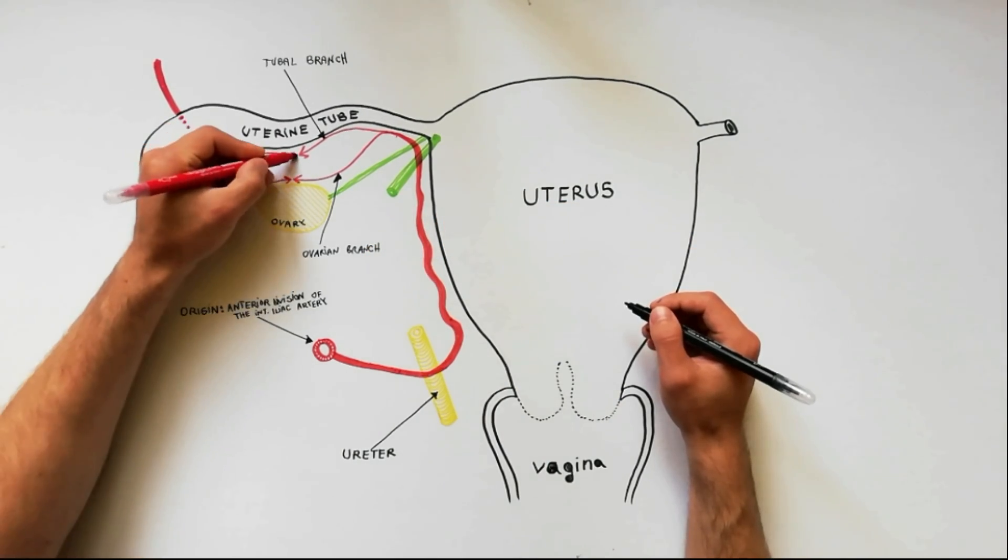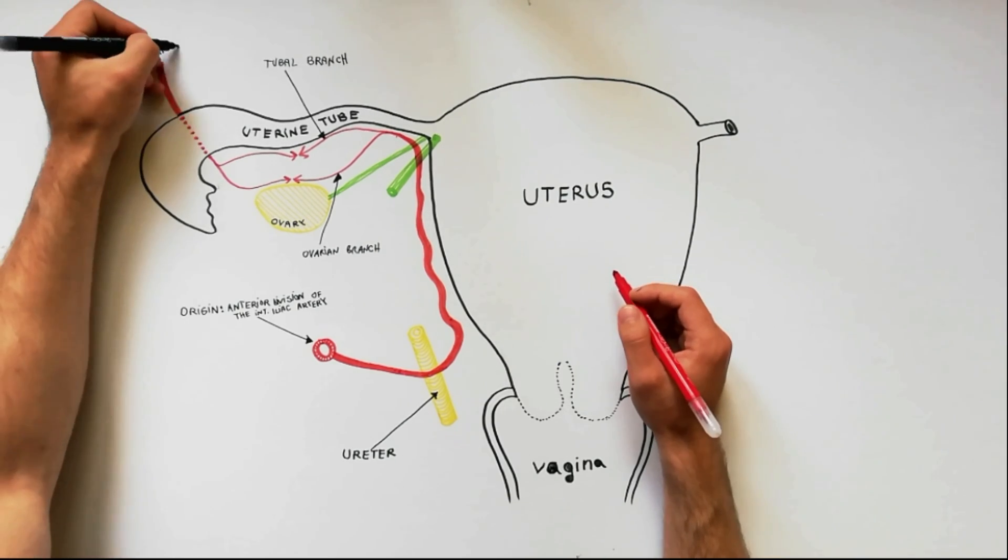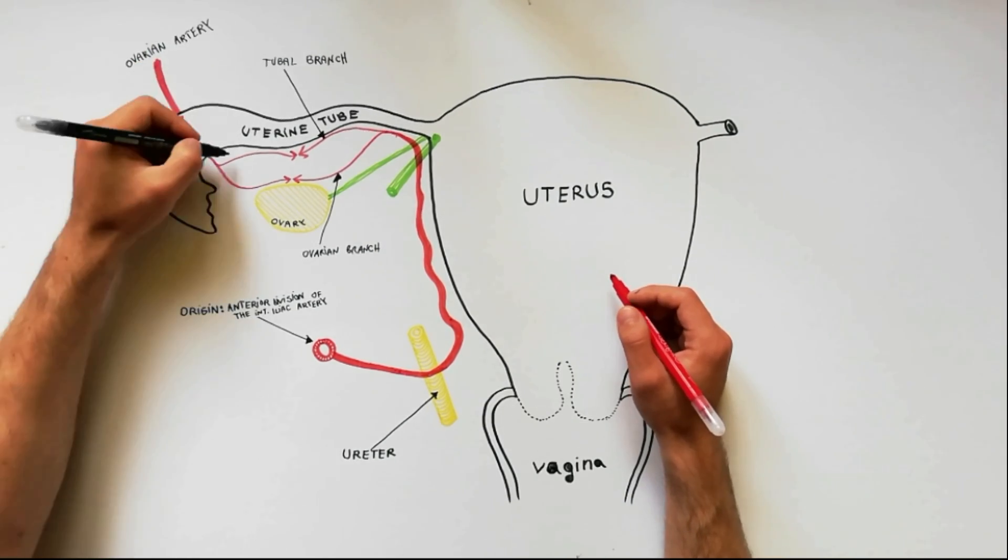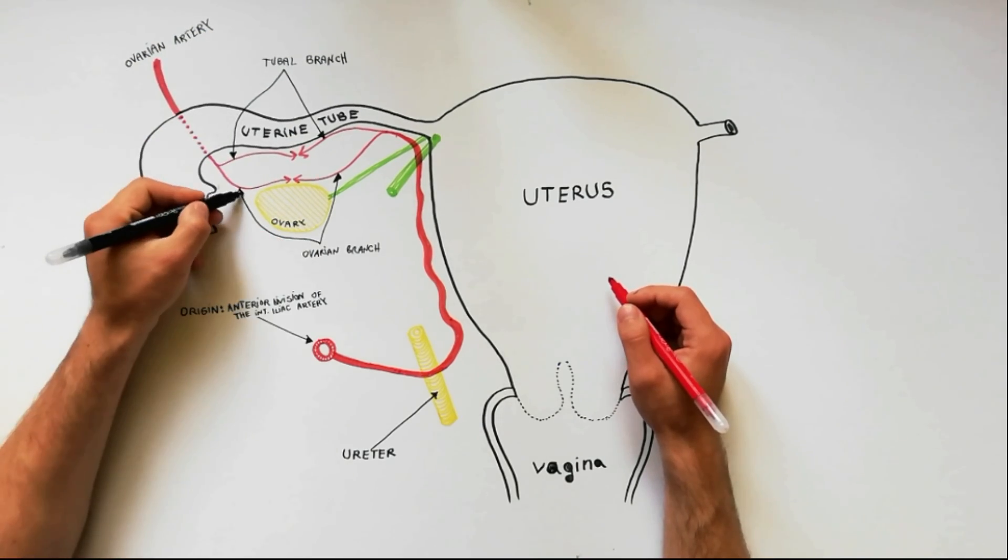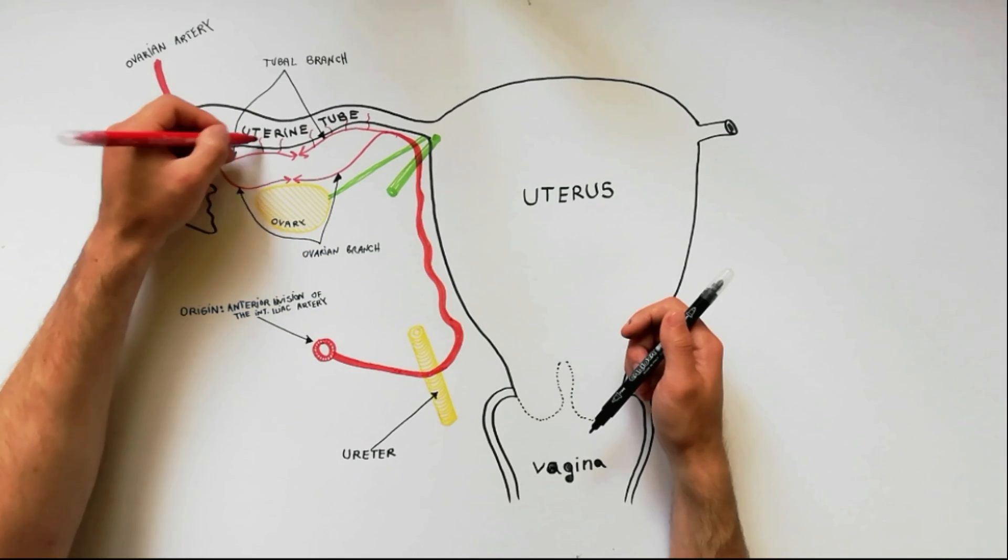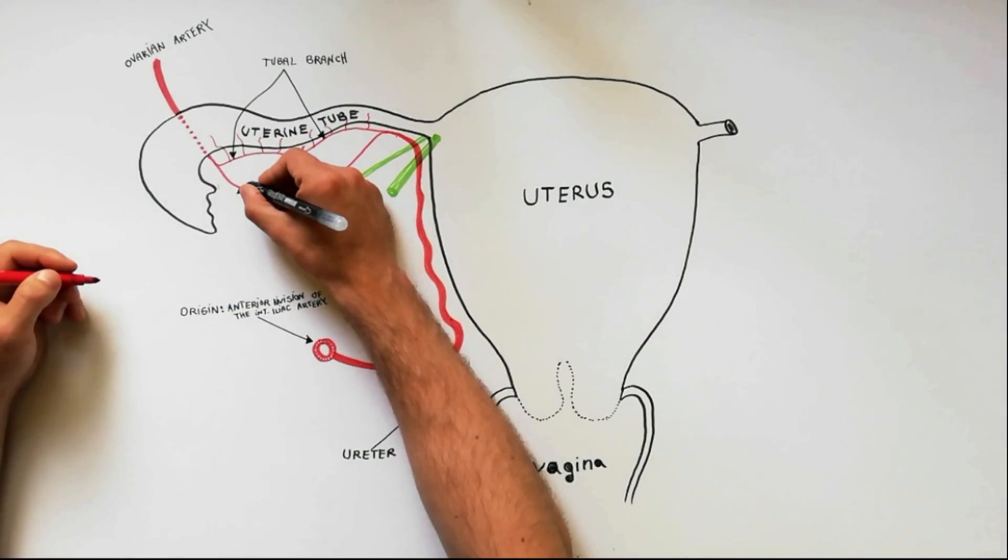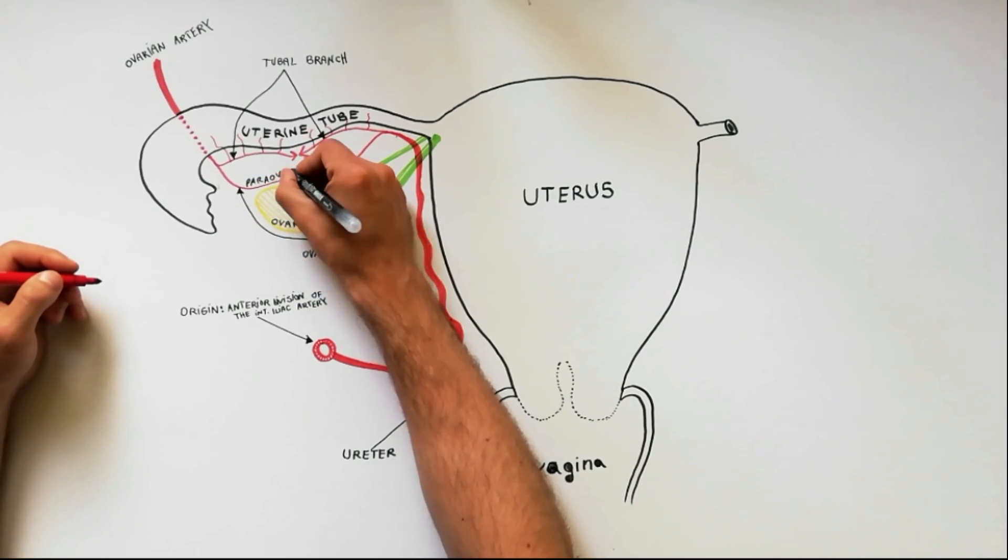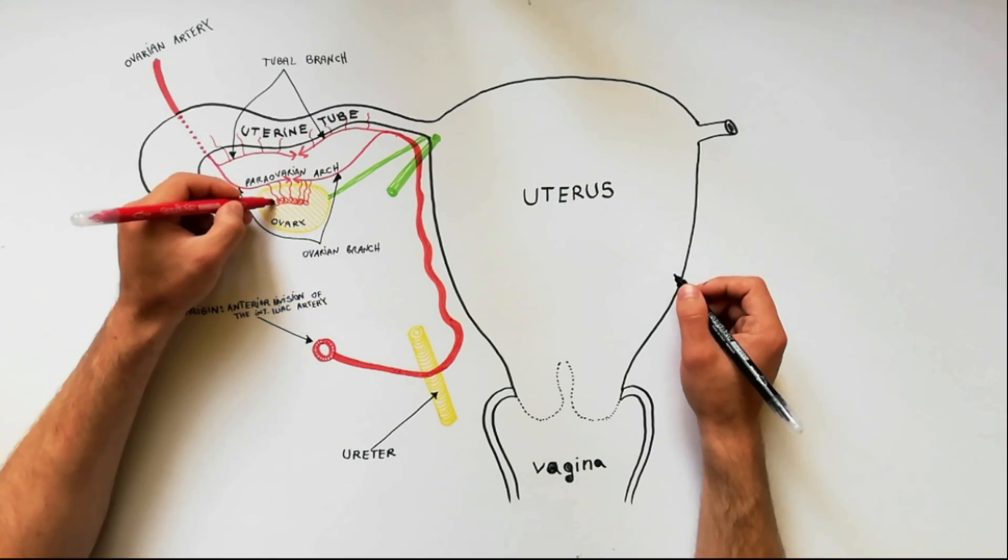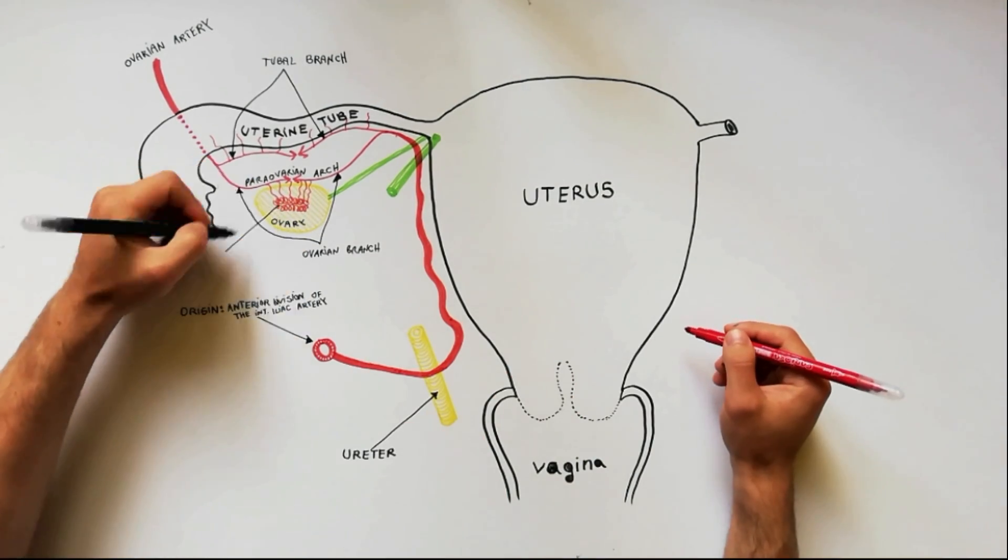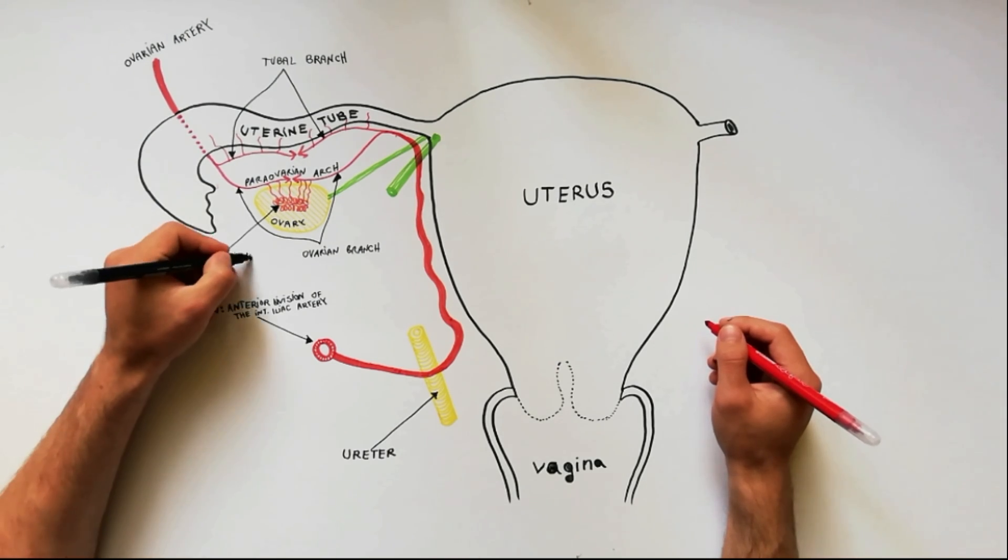Those terminal branches will anastomose with two similar branches from the ovarian artery. The tubal branches will supply the uterine tube. The ovarian branches of uterine and ovarian artery will form the para-ovarian arcade from which numerous arterial twigs will enter the meso-ovarium. Further on, those twigs will anastomose with each other, forming a plexus in the ovarian medulla.